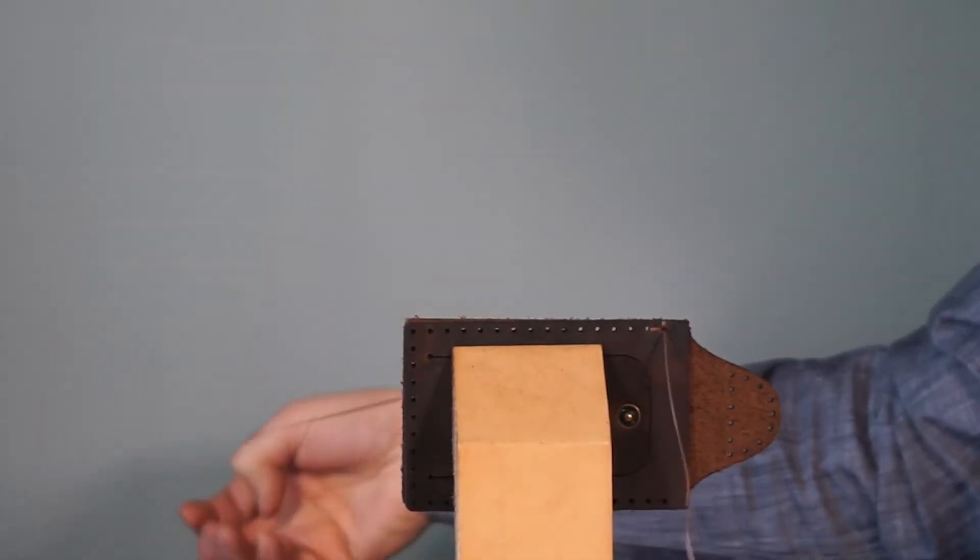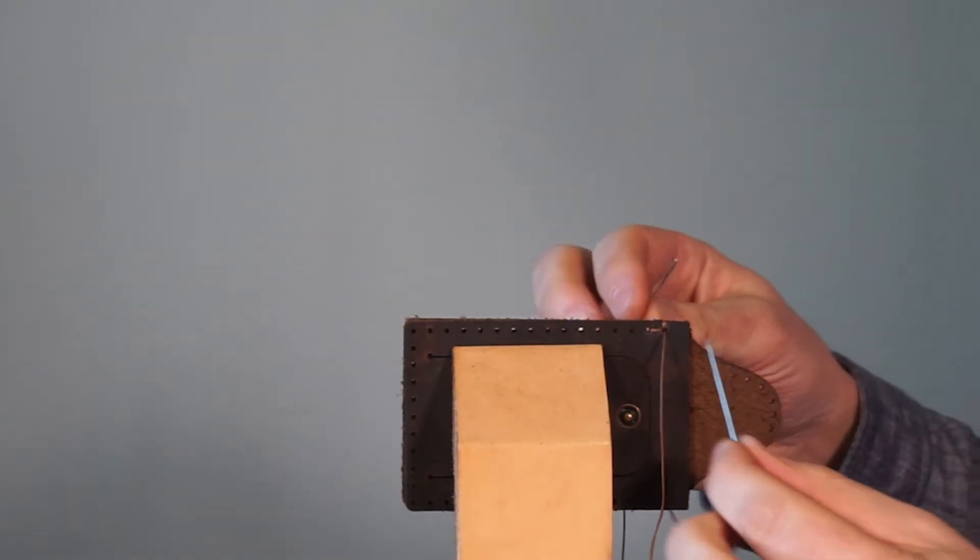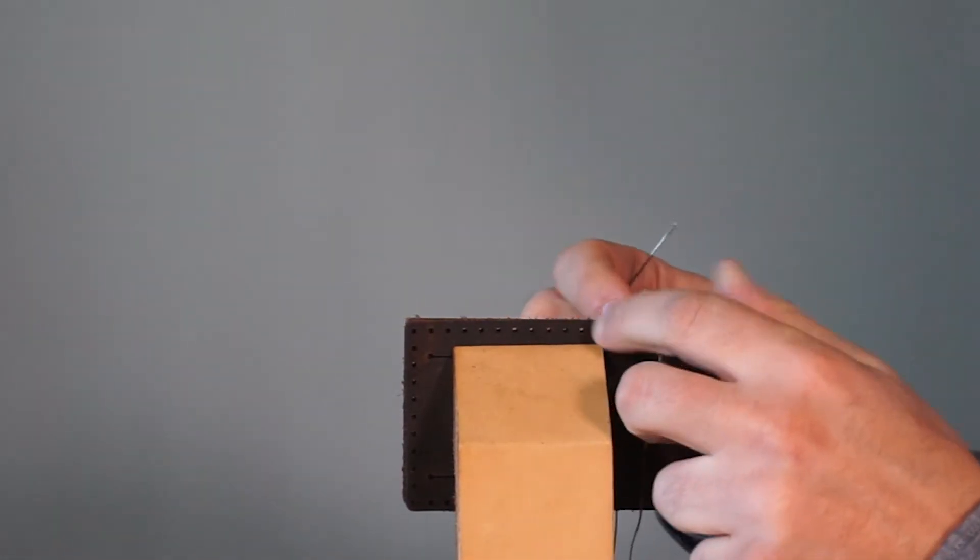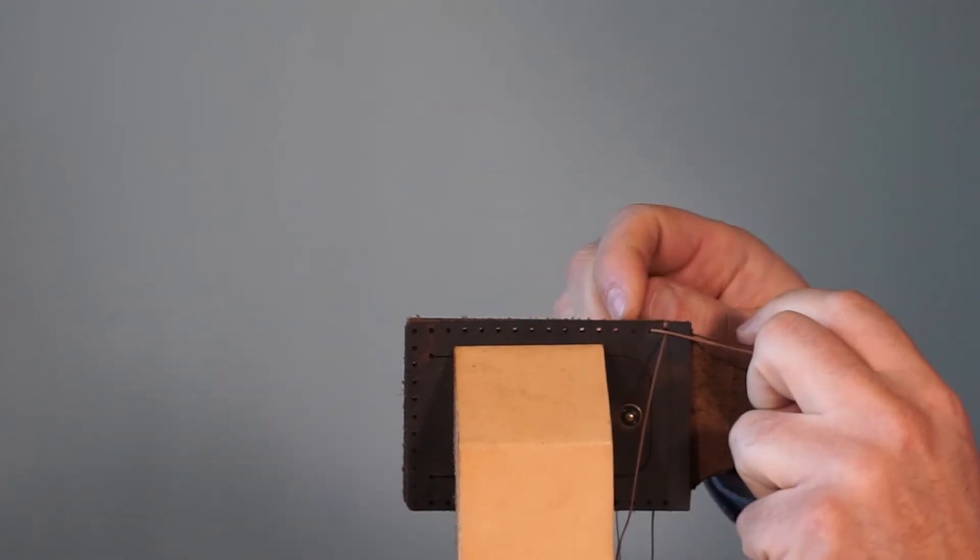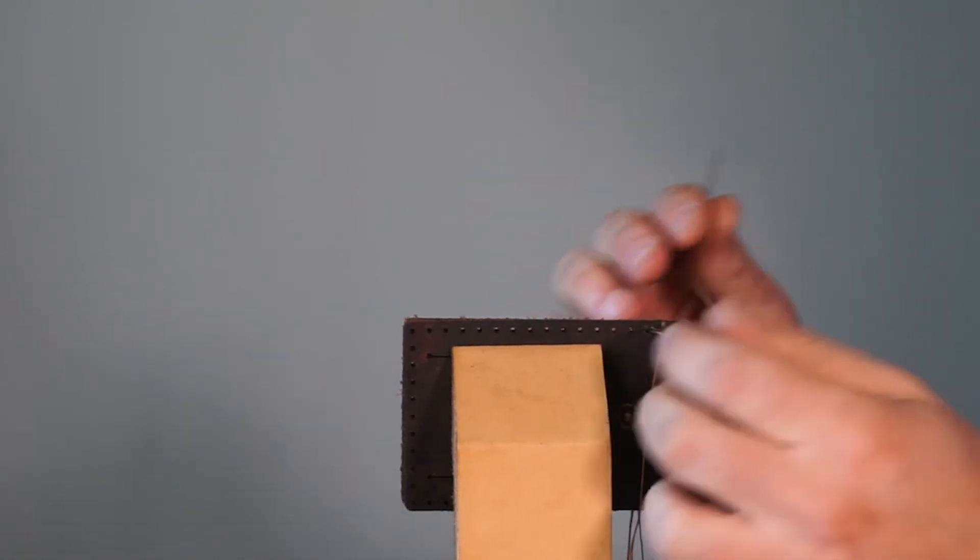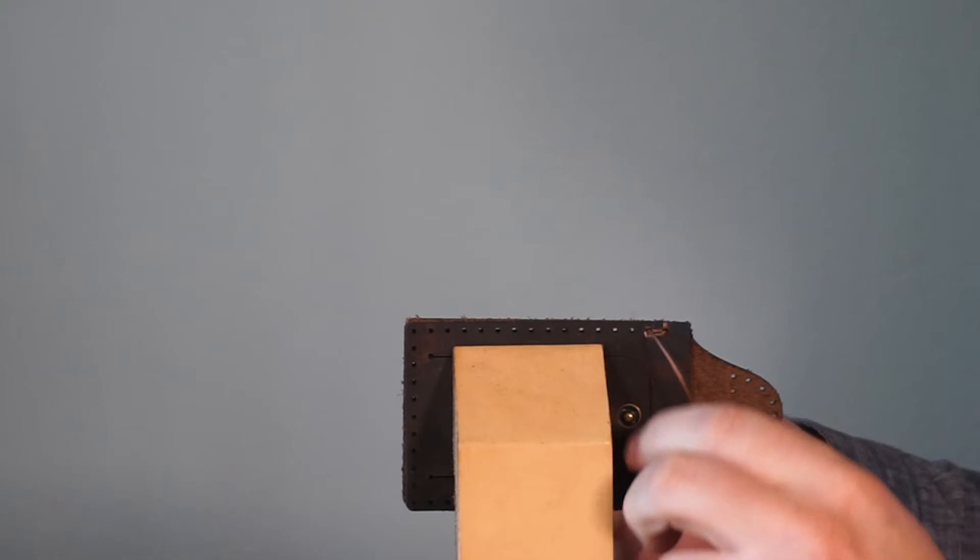Now simply saddle stitch forward along the stitching line until you reach the other end. Your first forward stitch here will go right over the last one you just did. Remember to pull all your stitches nice and tight as you go.